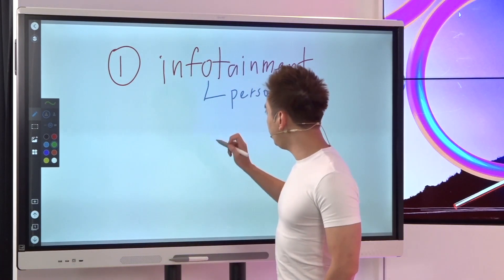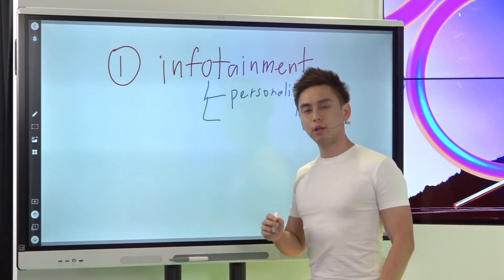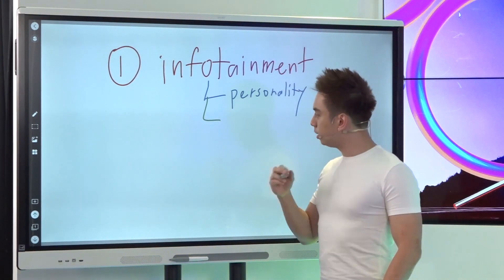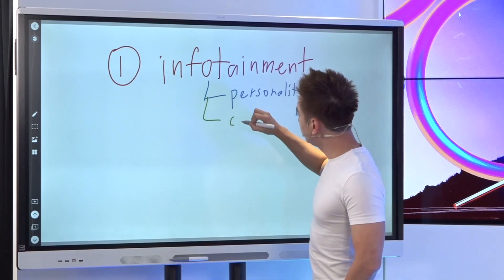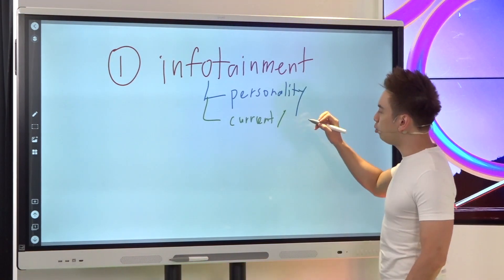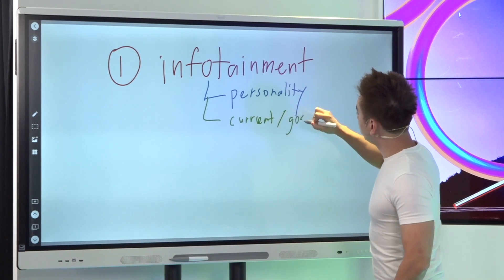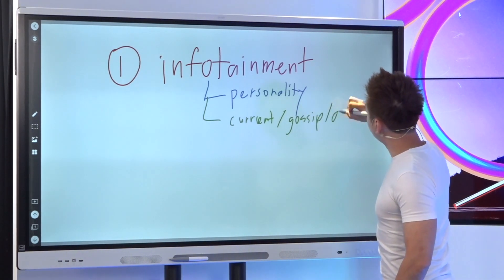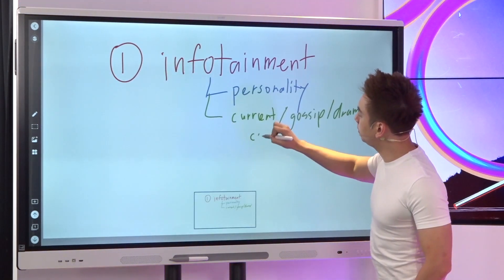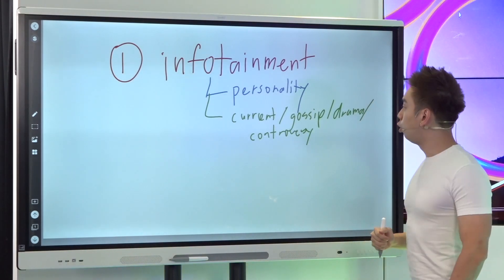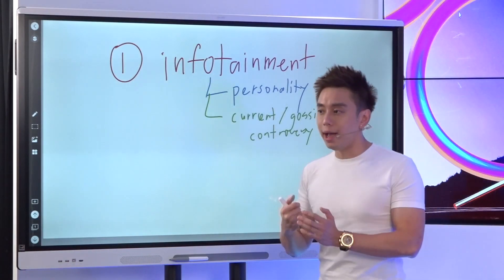Next one: can I utilize infotainment through something that is current? This could be like some sort of gossip, drama, controversy. Because that's what makes people want to click. So can I utilize infotainment based on something current so that people care about this thing they might not necessarily care about otherwise?